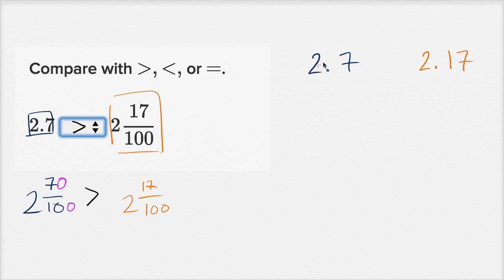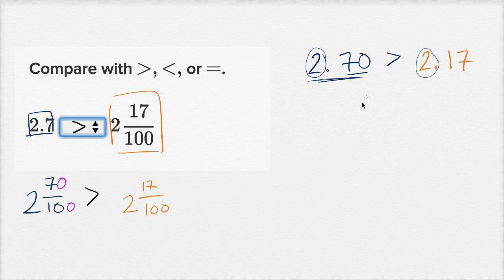There are a bunch of ways to make this comparison. You could say 2 and 7 tenths is the same thing as 2 and 70 hundredths, so over here I have 70 hundredths and over here I only have 17 hundredths — so this is going to be larger. Another way to think about it: start in the ones place. They both have two ones, so that doesn't tell you much. But in the tenths place, this number has 7 tenths while this one only has 1 tenth, so this number is going to be greater.